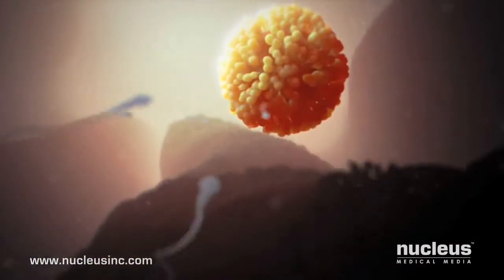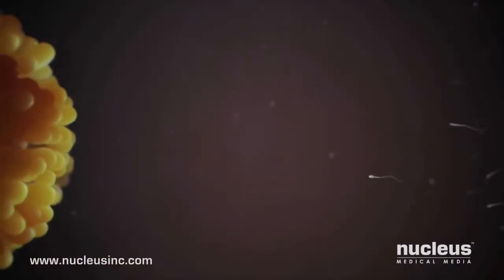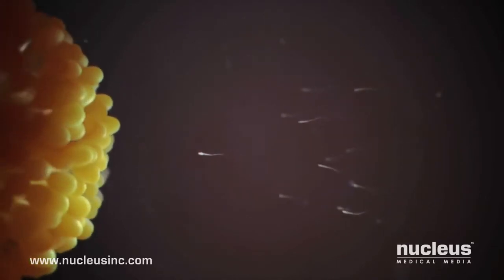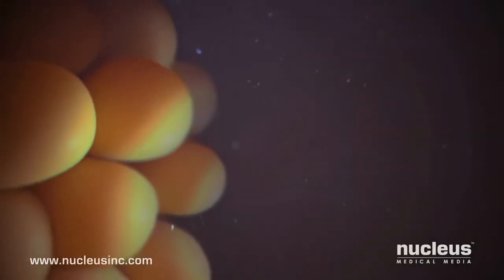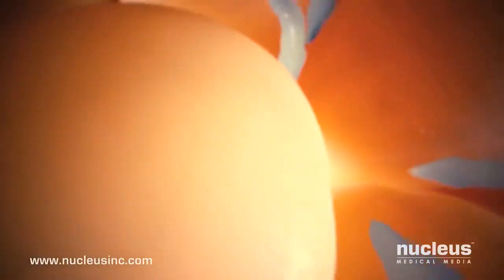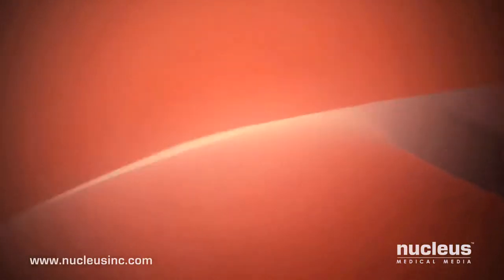At long last, the sperm reach the egg. Only a few dozen of the original 300 million sperm remain. The egg is covered with a layer of cells called the corona radiata. The sperm must push through this layer to reach the outer layer of the egg, the zona pellucida.